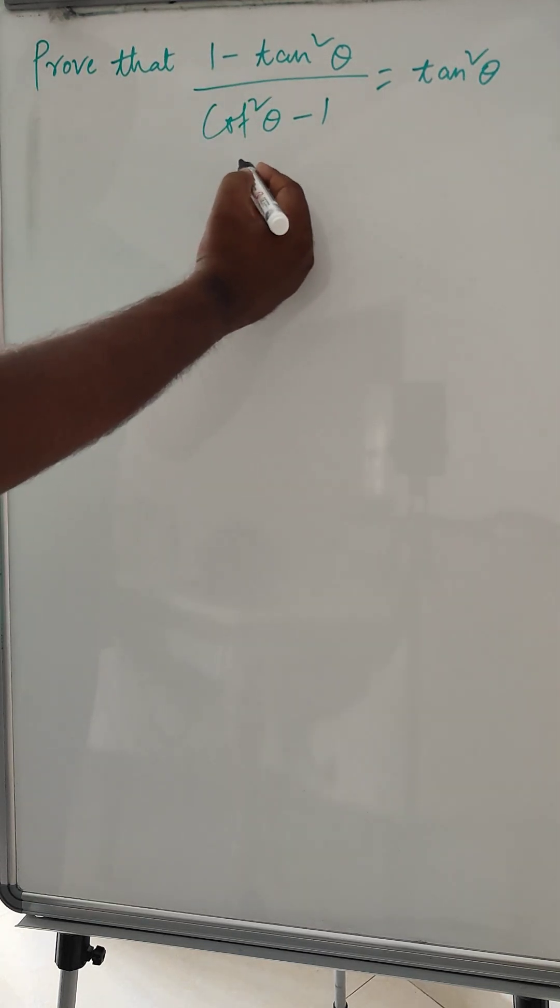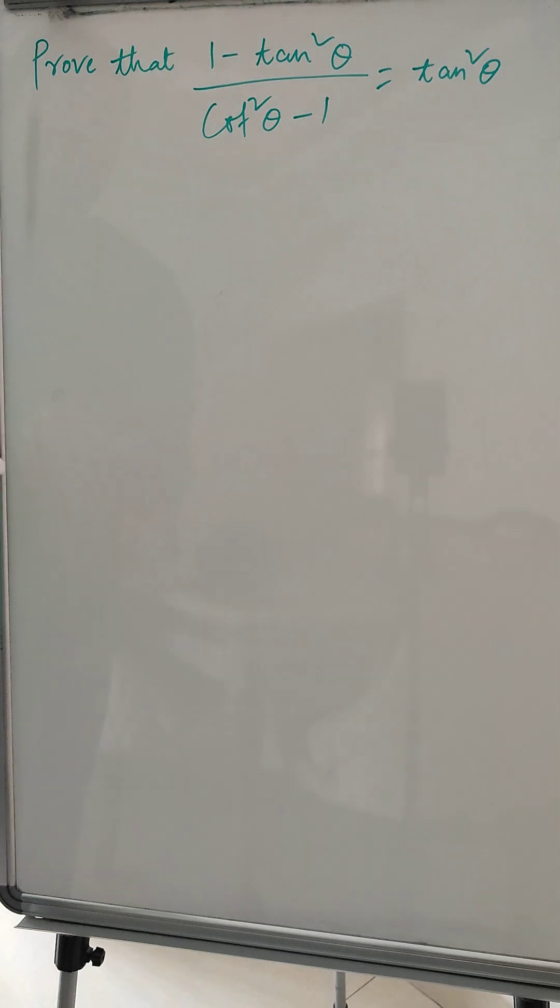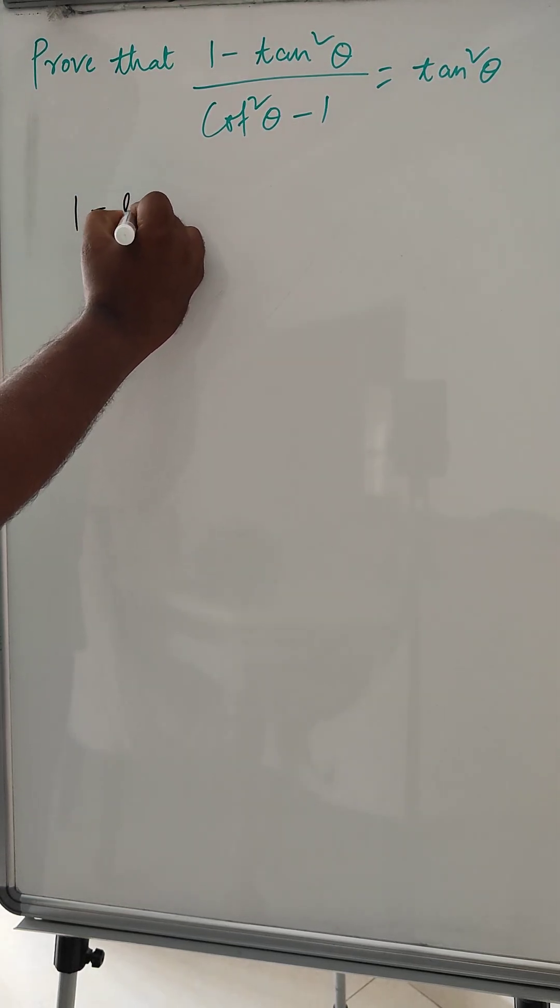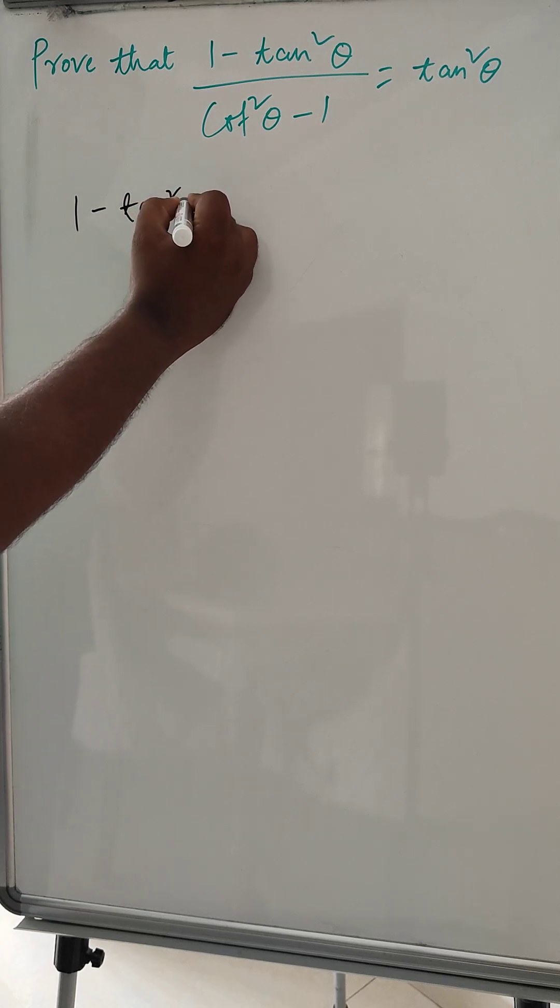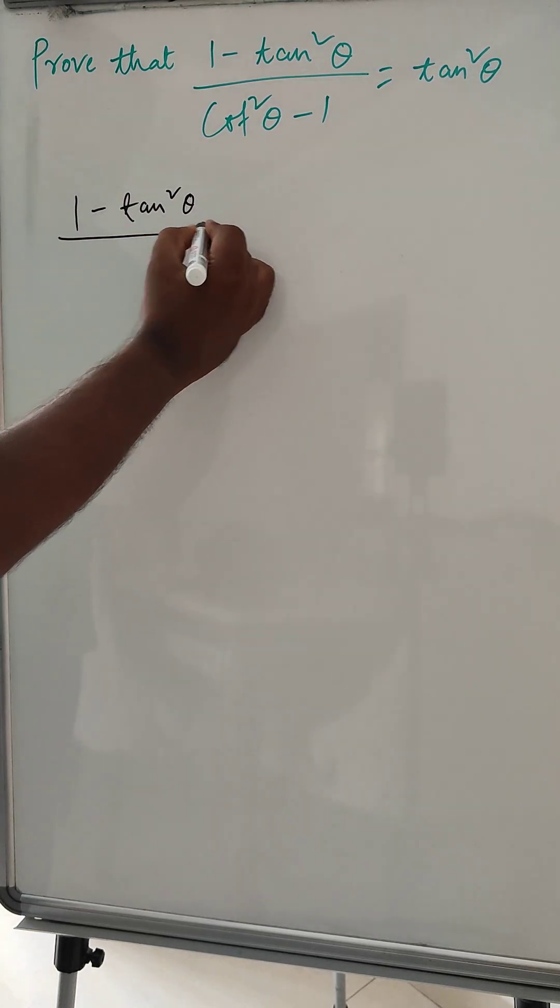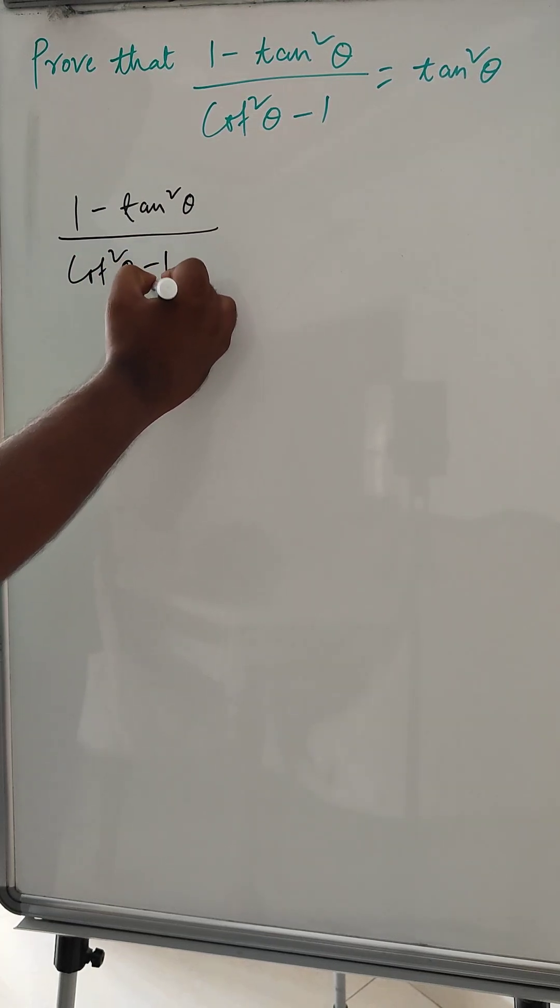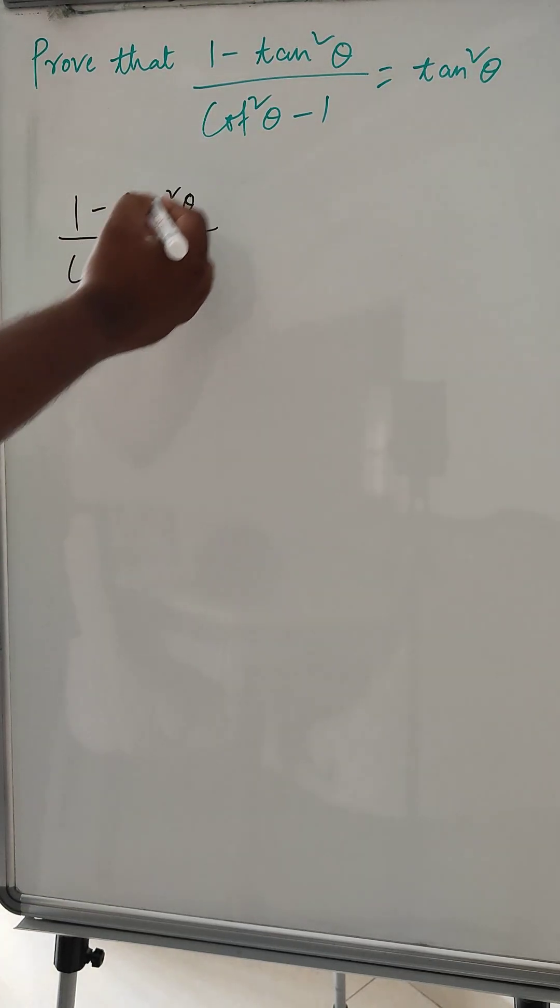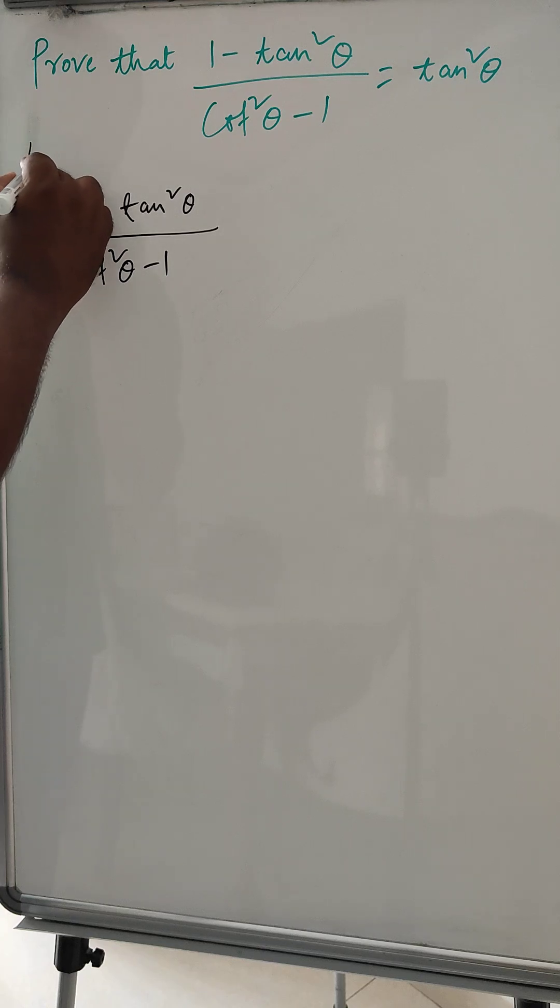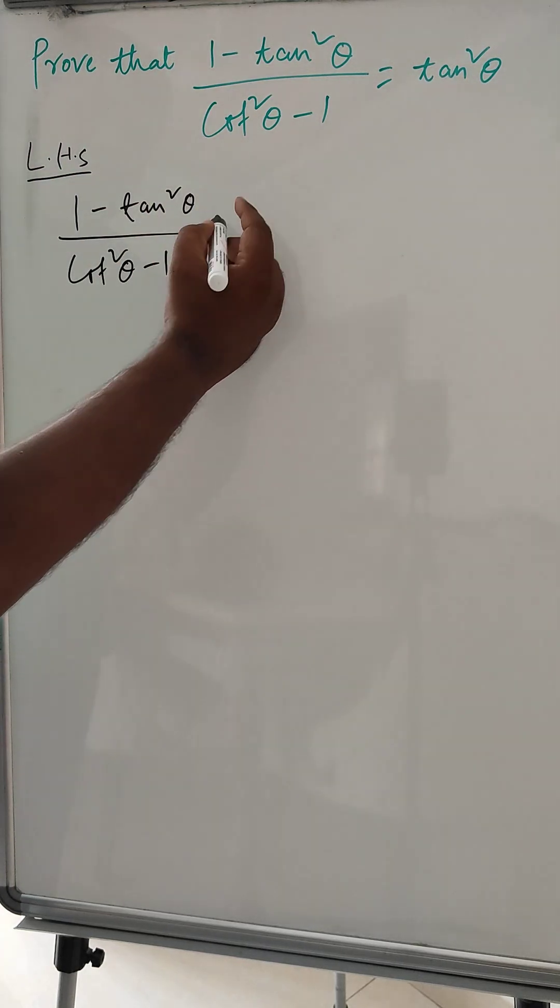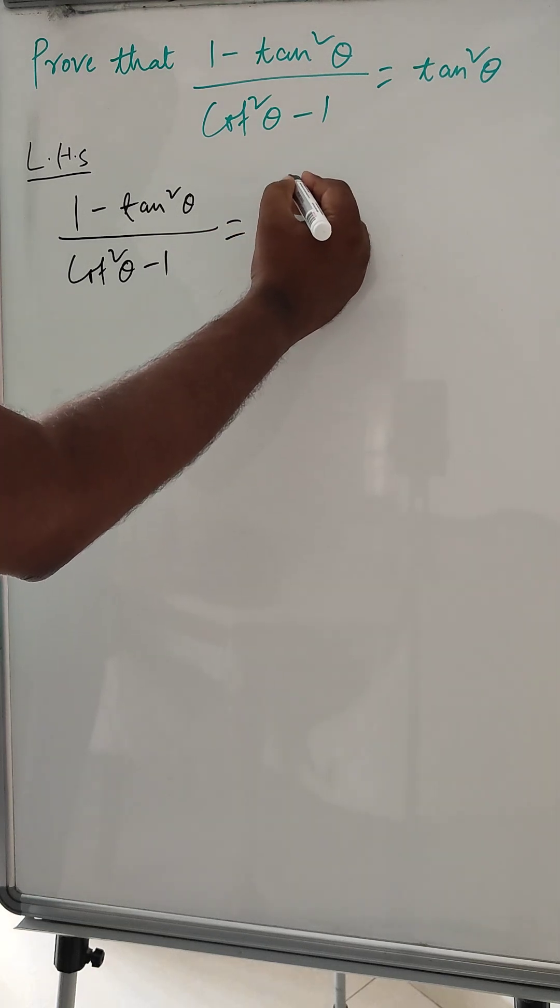This is LHS and we have to prove equal to RHS. So let's take 1 minus tan square theta and cot square theta minus 1. So we have taken LHS, and we can write over here. And then now this we can expand in terms of sin x and cos x.